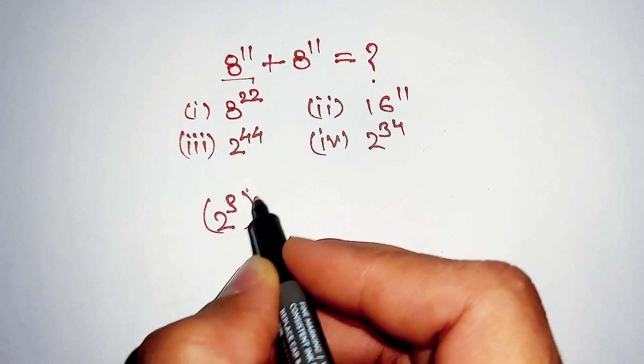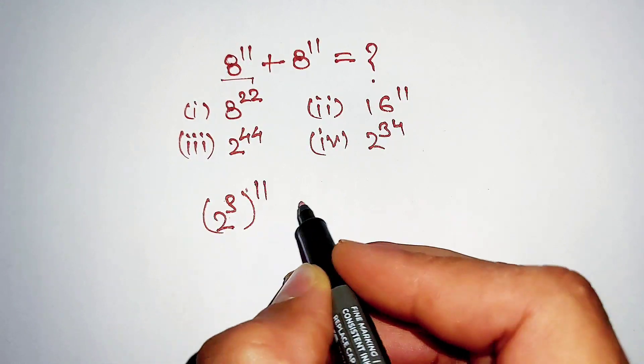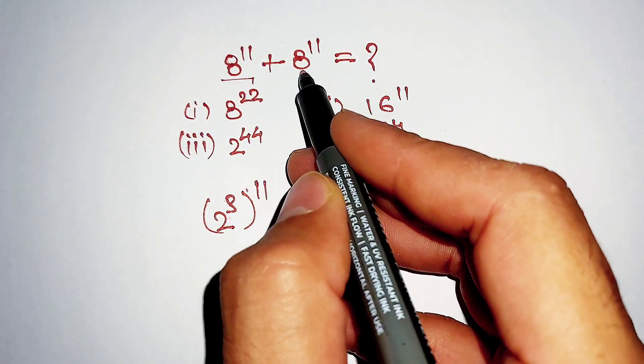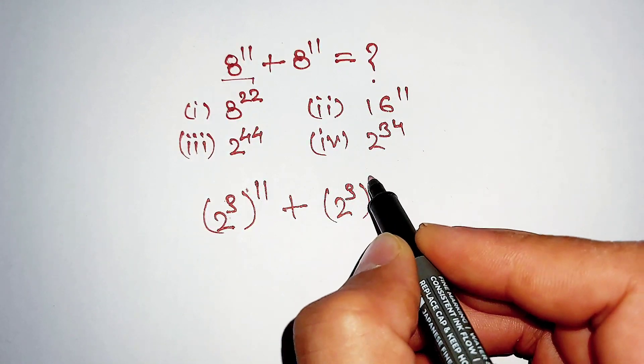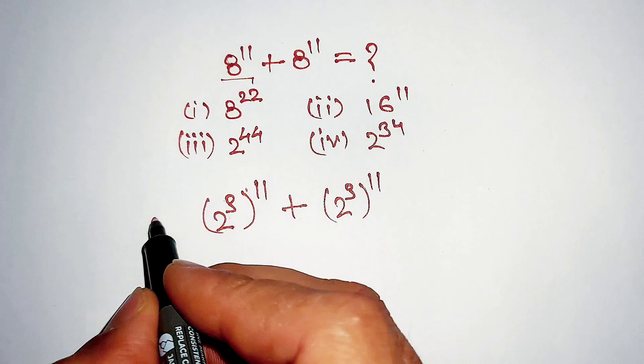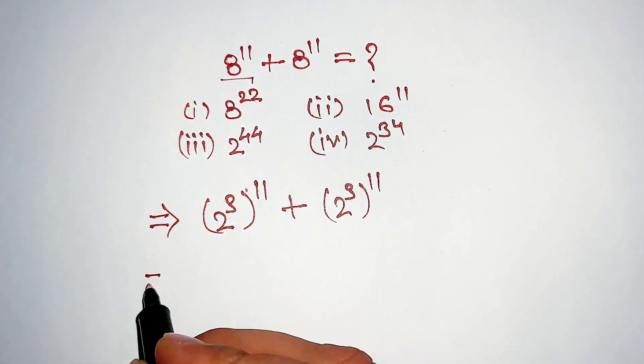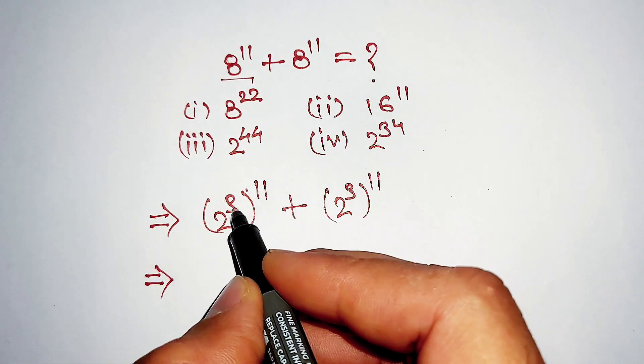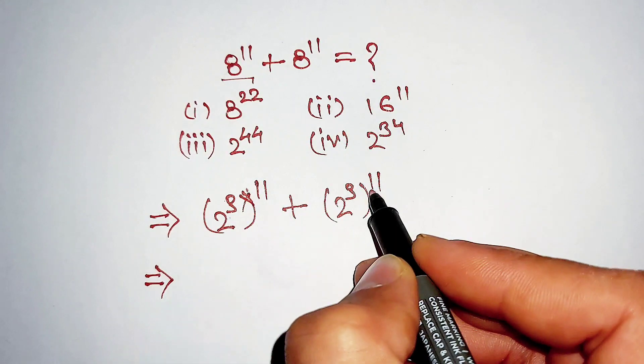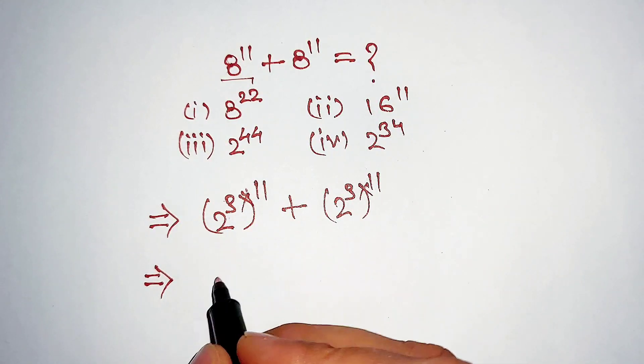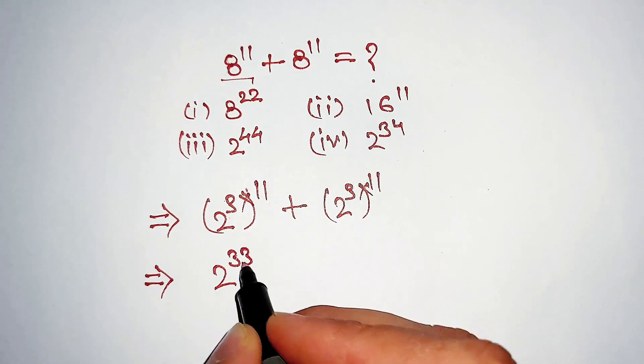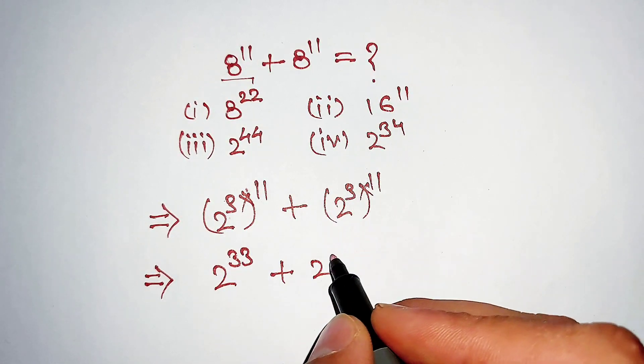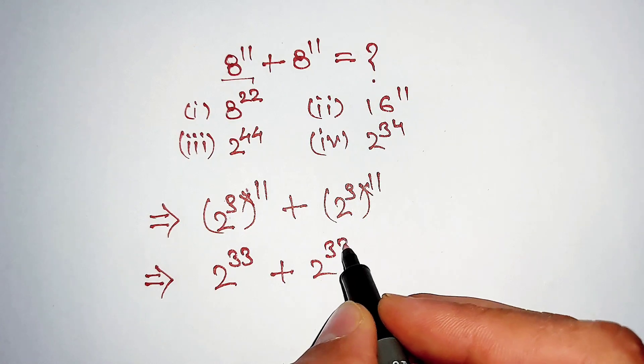Whole power is equal to 11, plus same like this 2 power 3 whole power 11. Now this and this are in multiply, so 3 multiply 11 is equal to 33, and same like here 2 power 33.